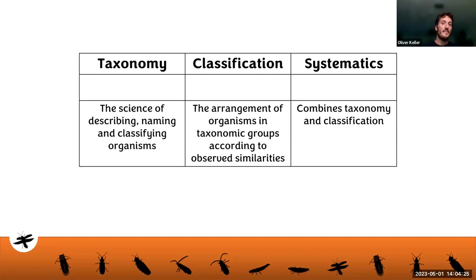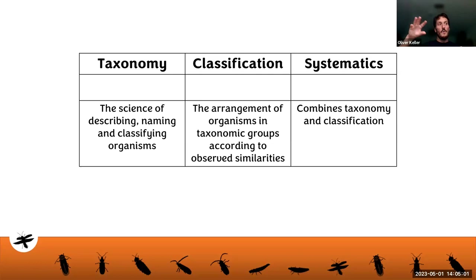Classification is the arrangement of organisms in taxonomic groups according to observed similarities — like light organs or antennae. The antennae might be a good way to organize at the genus level, while the light organ might be a good way to place them in the superfamily or family. And then systematics combines taxonomy and classification — we do morphological studies where we look at the specimen, or at the molecular level, or sometimes combine them, drawing information from morphology, molecular data, and maybe behavior to come up with a new classification.